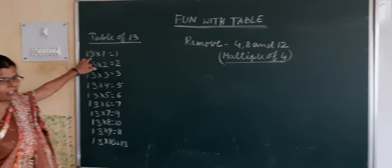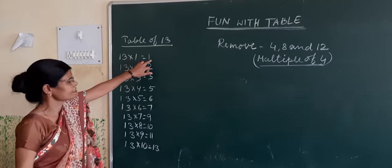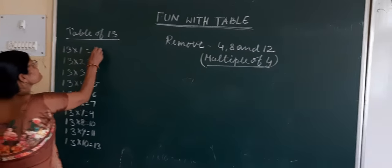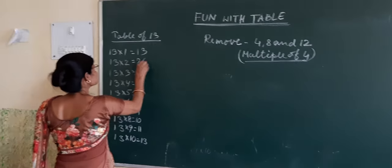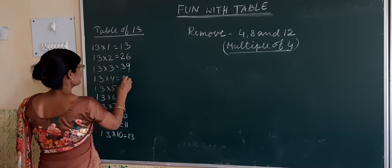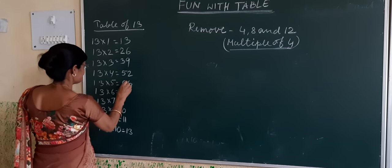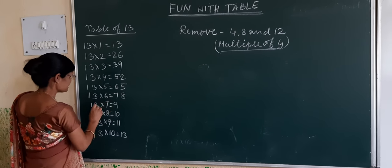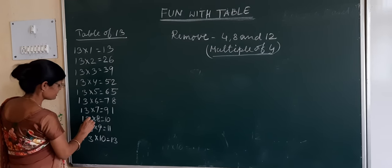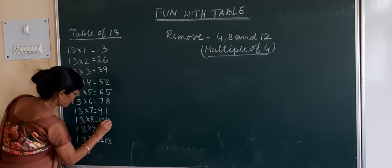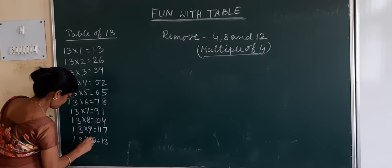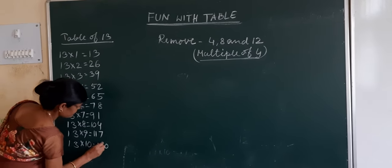Now recite the table of 3 after this sequence: 3 x 1 = 3, 3 x 2 = 6, 3 x 3 = 9, 3 x 4 = 12, 3 x 5 = 15, 3 x 6 = 18, 3 x 7 = 21, 3 x 8 = 24, 3 x 9 = 27, 3 x 10 = 30.